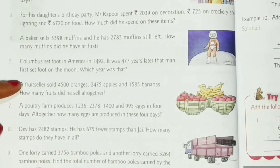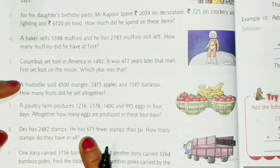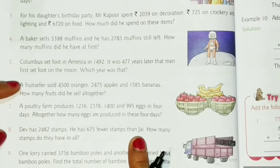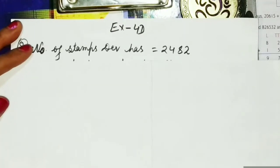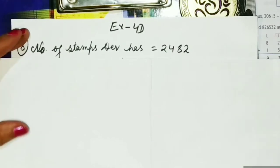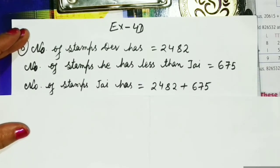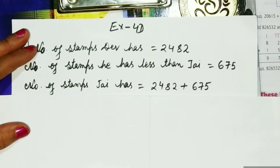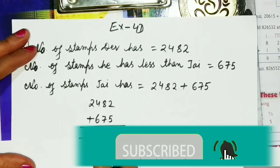Now let's move on to question number eight. Dev has 2482 stamps. He has 675 fewer stamps than Che. How many stamps do they have in all? Let us solve question number eight. The number of stamps Dev has is 2482. The number of stamps he has less than Che is 675. So the number of stamps Che has will be equal to 2482 plus 675, which gives us 3157.